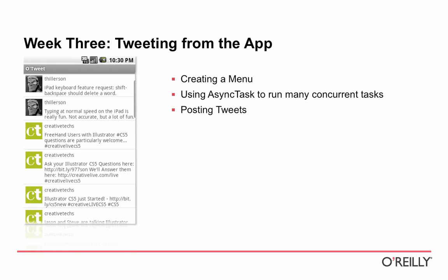In week three, we'll modify the application so you can tweet from the app, which means adding new views and activities along with a navigation menu. We'll also use the AsyncTask class, introduced in the 1.6 SDK, which makes it super simple to break off background jobs and let Android handle thread pooling and complex threading issues — you just say 'run this in the background and tell me when it's done.' We'll switch over from using raw threads to using AsyncTask, and we'll also be posting tweets.